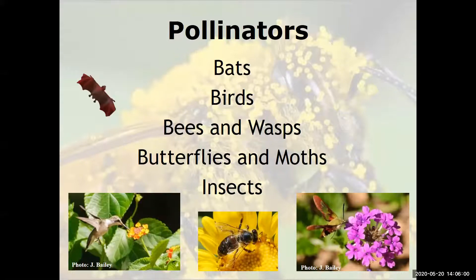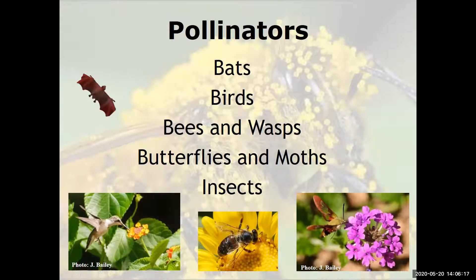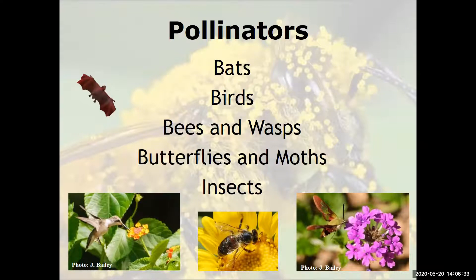Pollinators include bats, birds, bees and wasps, butterflies and moths, and insects. There's also the wind and the movement of people walking by plants. When we list bees, it's not just honeybees we're talking about. We're talking about native bees, of which there are a lot in the United States, North America, and worldwide. Right now, the blue orchard mason bees are out. I'm a native bee advocate, so I may talk a little in excess about native bees.